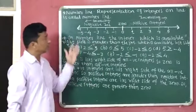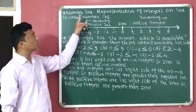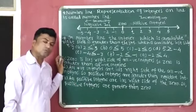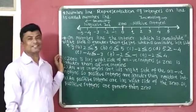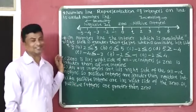So this is the explanation of the number line. I hope you can understand this. Thank you.